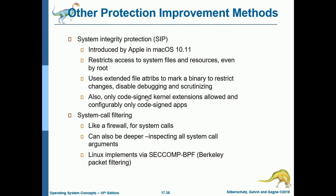Other protection improvement methods include: System Integrity Protection (SIP), introduced by Apple in Mac OS 10.11. SIP restricts access to system files and resources even by root, uses extended file attributes to mark a binary to restrict changes, disables debugging and scrutinizing. Only code-signed kernel extensions are allowed, and configurably only code-signed apps. System call filtering acts like a firewall for system calls and can inspect all system call arguments. Linux implements this via SECCOMP BPF — SECCOMP means secure computing with filters, and BPF is Berkeley Packet Filtering.